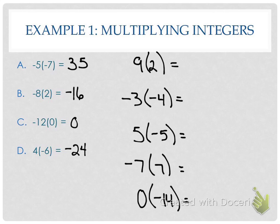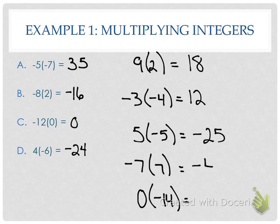Now I want you to answer these five on your own. 9 times 2? 18. Negative 3 times negative 4? Positive 12 — because we have an even number of negatives. 5 times negative 5? Negative 25. Negative 7 times 7? Negative 49. Zero times negative 14? Zero. Who got all five?